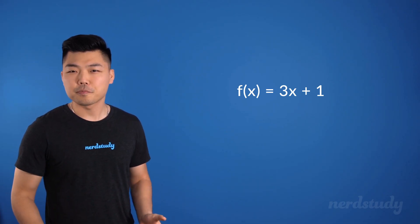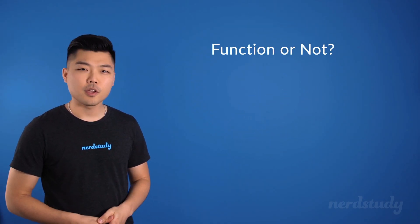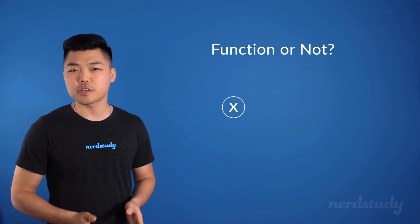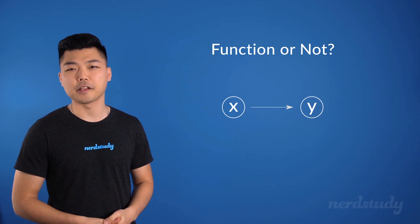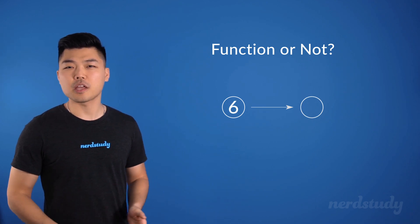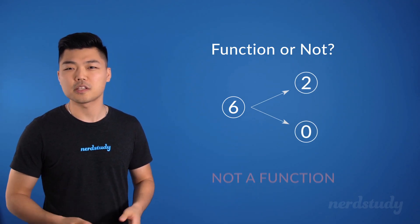Speaking of which, how can we tell if an equation is a function or not? Well, as we mentioned before, all x values in a function must only produce one y value. So if we put in a value for x and get two different numbers, we know right away that this is not a function.